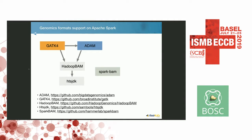Hadoop BAM has a few issues. It has some performance issues in that sometimes things that could be run in parallel are actually run serially. It also has some correctness issues in that the BAM specification actually allows record delimiters to be part of records themselves, so occasionally when you're trying to split a BAM file, you may find the split has happened in the middle of a record and you will corrupt your data.